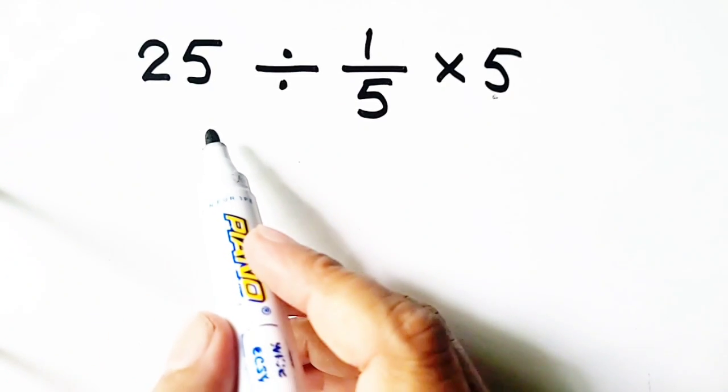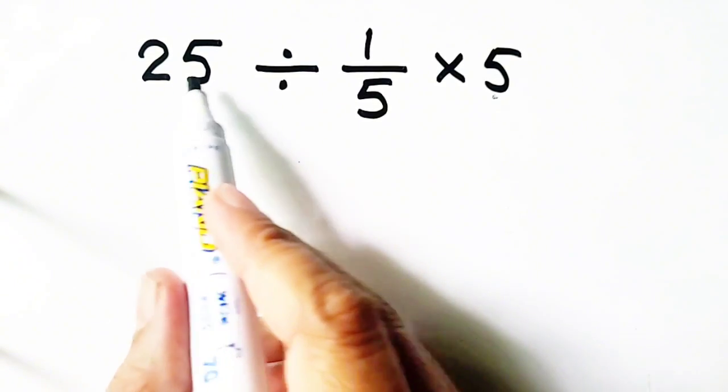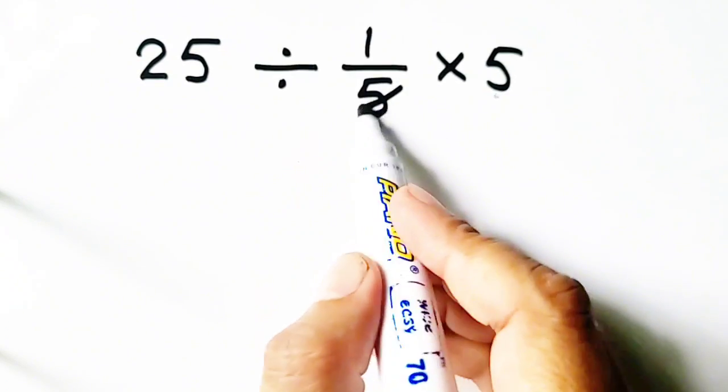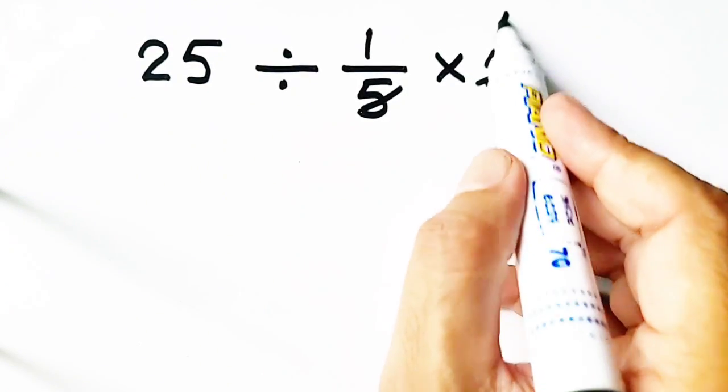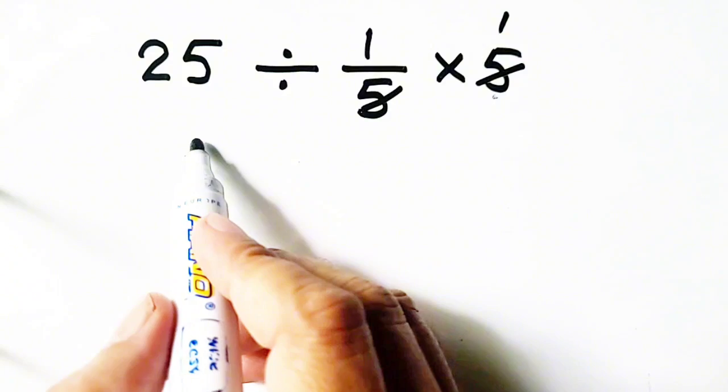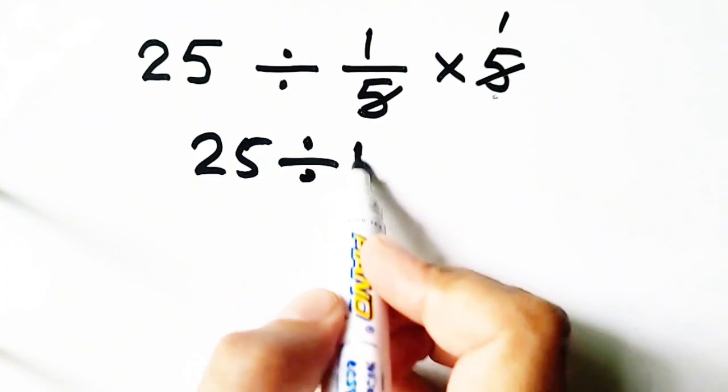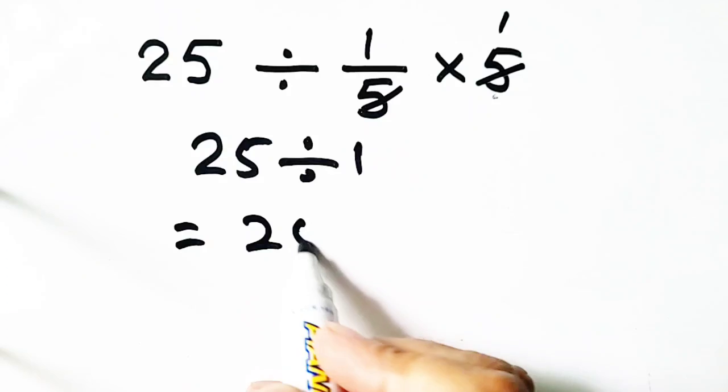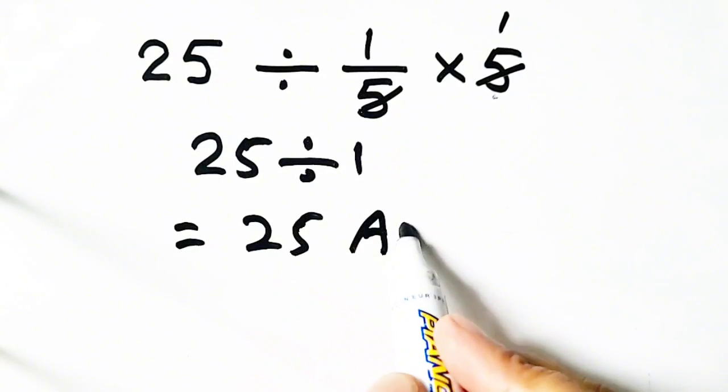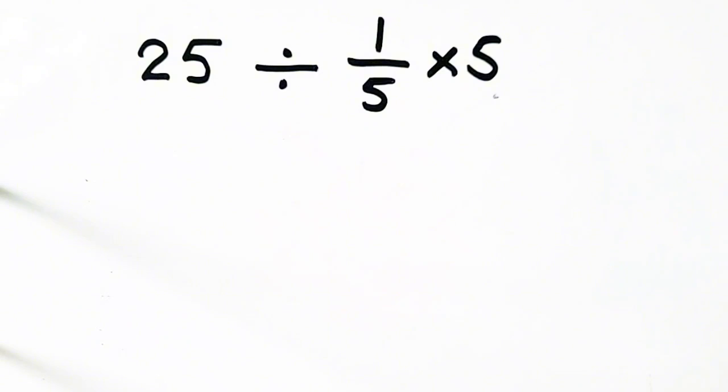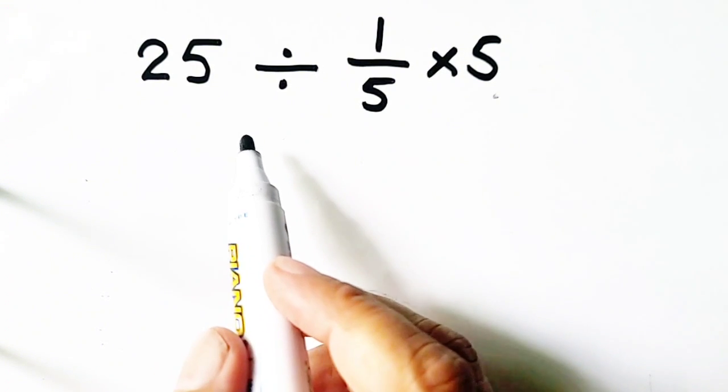Hello, welcome to my YouTube channel. Let's solve 25 divided by 1/5 times 5. If we cancel 5 with 5, then 25 divided by 1 equals 25, which would be our answer. But this is wrong, so we will adopt the right way to solve it.